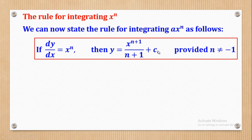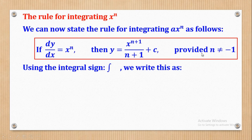This condition holds only if n is not equal to negative 1. Why doesn't it hold when n equals negative 1? Because when you substitute n equal to negative 1, you get the denominator as 0, and any number divided by 0 becomes meaningless — it becomes infinity. That is why this formula holds for all integrals provided n is not equal to negative 1.